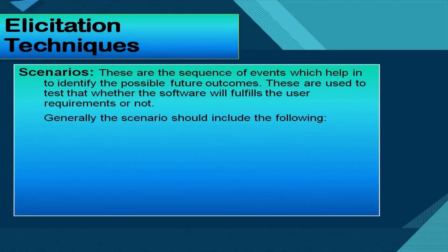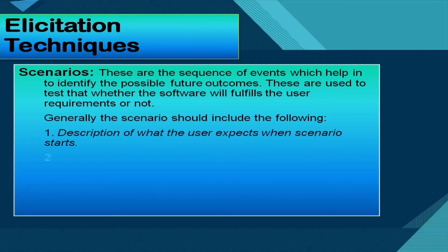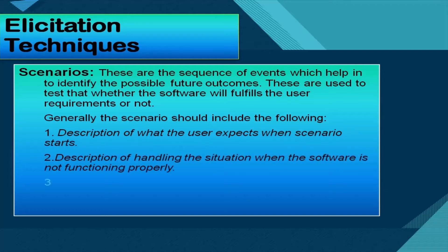Scenarios are the sequence of events which help in the identification of possible future outcomes. These are used to test whether the software will fulfill the user requirements or not. Generally, a scenario should contain a description of what the user expects when the scenario starts, a description of how to handle the situation when the software is not functioning properly, and a description of the state when the scenario ends.